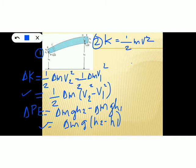Now we substitute all these expressions into the work-energy theorem. According to the work-energy theorem, work done equals change in kinetic energy plus change in potential energy. We will substitute the expressions for work done, change in kinetic energy, and change in potential energy into this theorem.